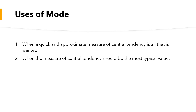Mode is used when a quick and approximate measure of central tendency is all that is wanted. For example, as a businessman or shopkeeper, you just want to know which item is most frequently sold. If you want to order 10 t-shirts, most probably 8 will be medium size and only one or two will be small or large size. The most frequently occurring value is considered the mode.